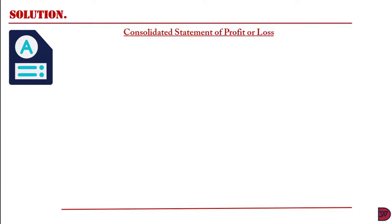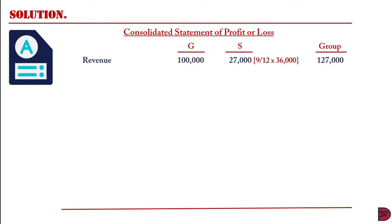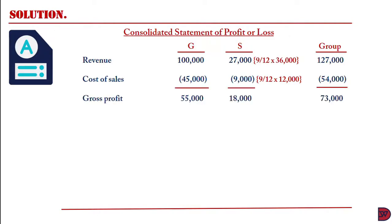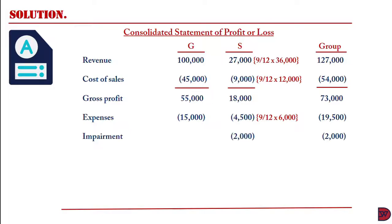For the consolidated statement of profit or loss: revenue is $100,000 for Jane. For the subsidiary, we take 9 over 12 of their revenue, giving $27,000. Adding to the parent gives $127,000 for the group. Cost of sales: $45,000 for Jane, $9,000 pro-rated for S. Gross profit: $55,000 for the parent, $18,000 for the subsidiary, and $73,000 for the group. Expenses are $19,500 for the group. The impairment of $2,000 is attributed to the subsidiary and is not prorated because the goodwill arose from the purchase — the entire figure is attributed to the consolidated account.